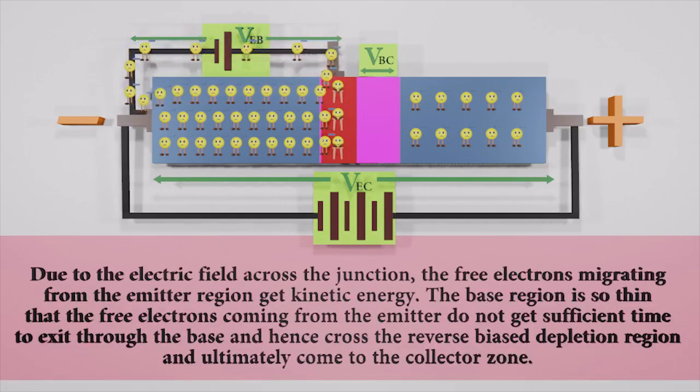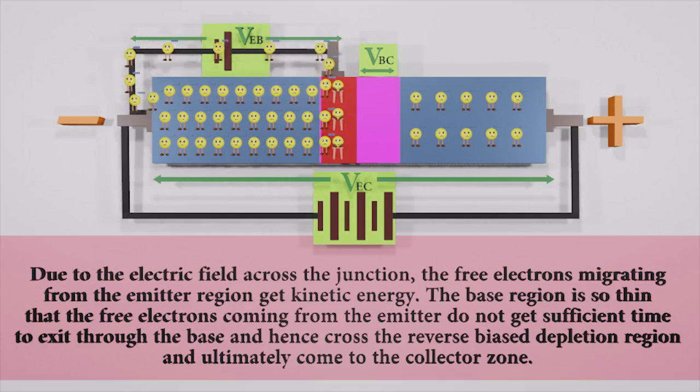But due to the electric field across the junction, the free electrons migrating from the emitter region get kinetic energy. The base region is so thin that the free electrons coming from the emitter do not get sufficient time to exit through the base and hence, cross the reverse bias depletion region and ultimately come to the collector zone.